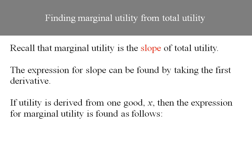If utility is derived from just one good, let's say x, then the expression for marginal utility will be the derivative of utility with respect to x. And we abbreviate that MU sub x.